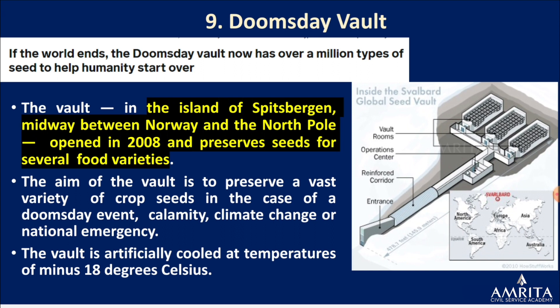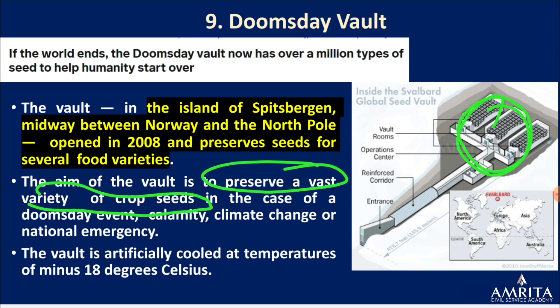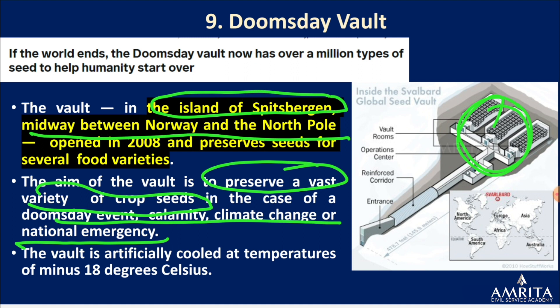Next is the Doomsday Vault. Doomsday refers to when life on Earth feels threatened — nuclear winter, climate change, or similar. This vault stores a vast variety of crop seeds so that survivors can restart agriculture. It is located on the island of Spitsbergen, midway between Norway and the North Pole. They have stored around one million types of seeds kept at minus 18 degrees Celsius. Recently it was in the news as they crossed the figure of one million seeds, with some Native American tribes also contributing new crop varieties.